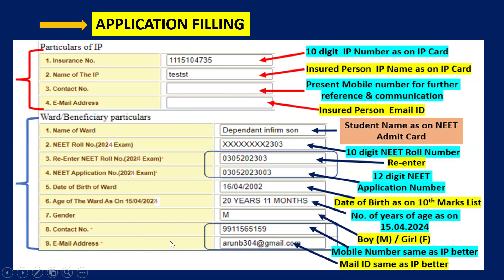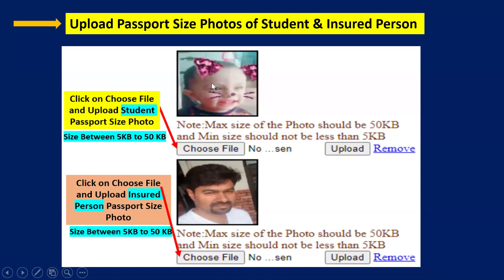Next, enter the email address, which may be the parent's email ID. Then upload passport size photos of the student and the insured person.